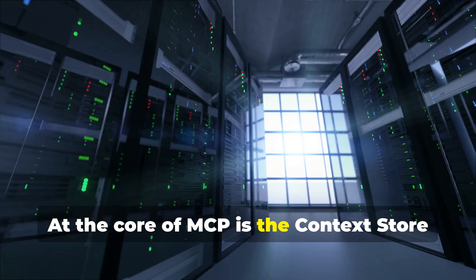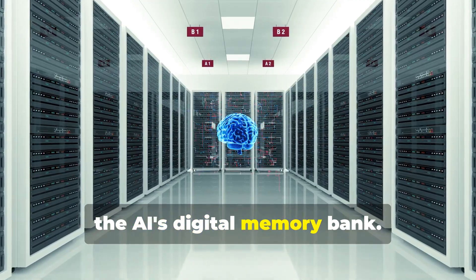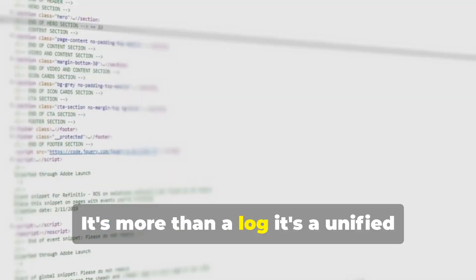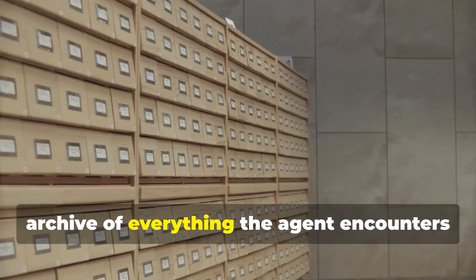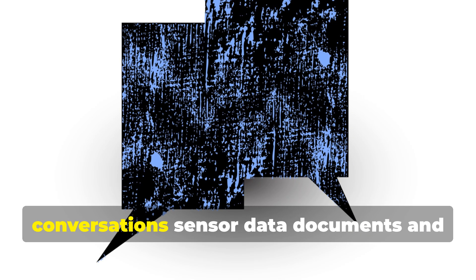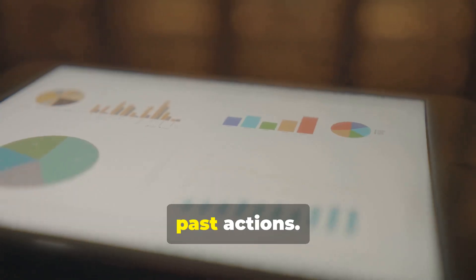At the core of MCP is the context store, the AI's digital memory bank. It's more than a log. It's a unified archive of everything the agent encounters: conversations, sensor data, documents, and past actions.